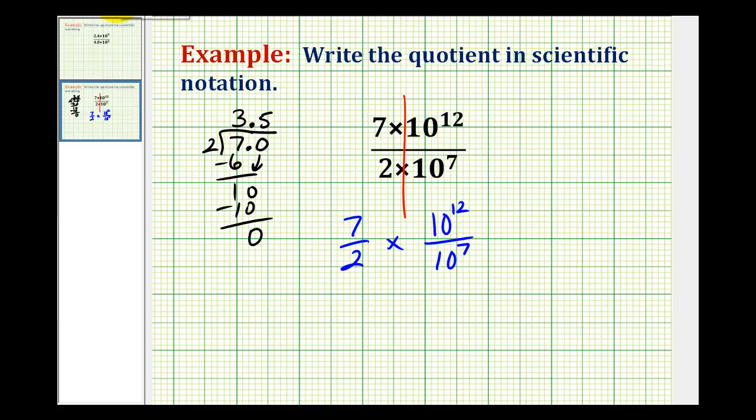So this quotient is equal to three point five times. Now to determine the quotient here, since the bases are the same, we subtract our exponents. Twelve minus seven is equal to five. So we have ten to the power of five.